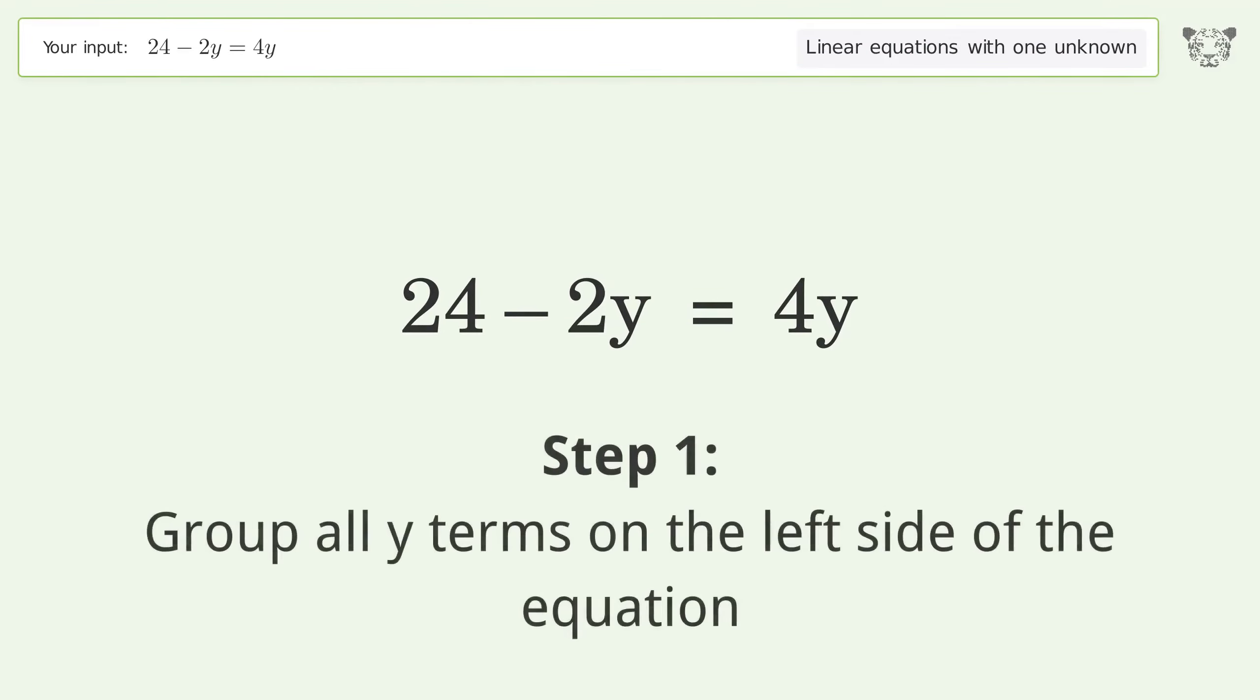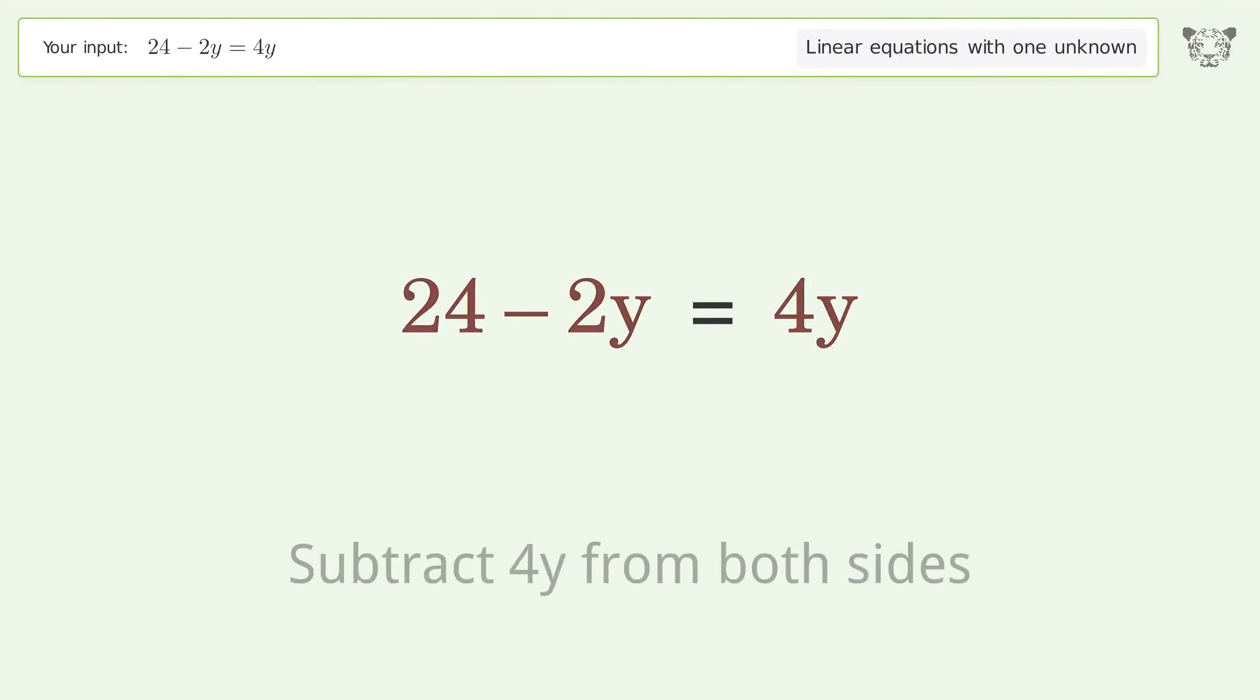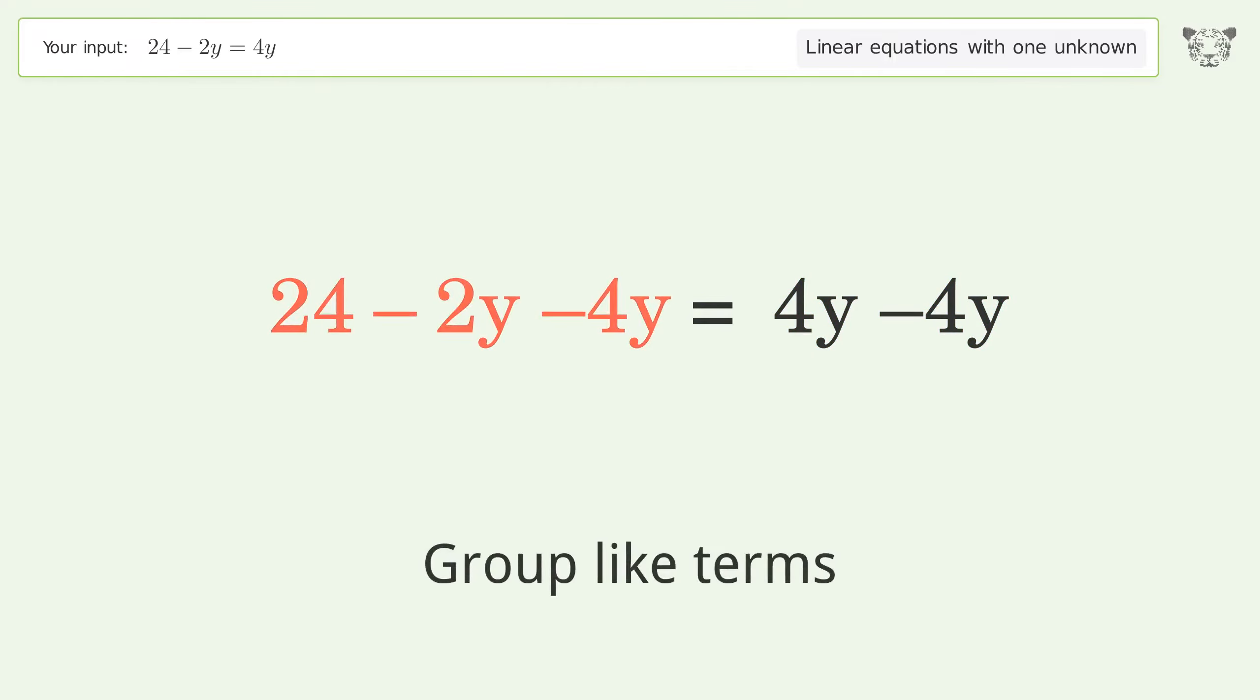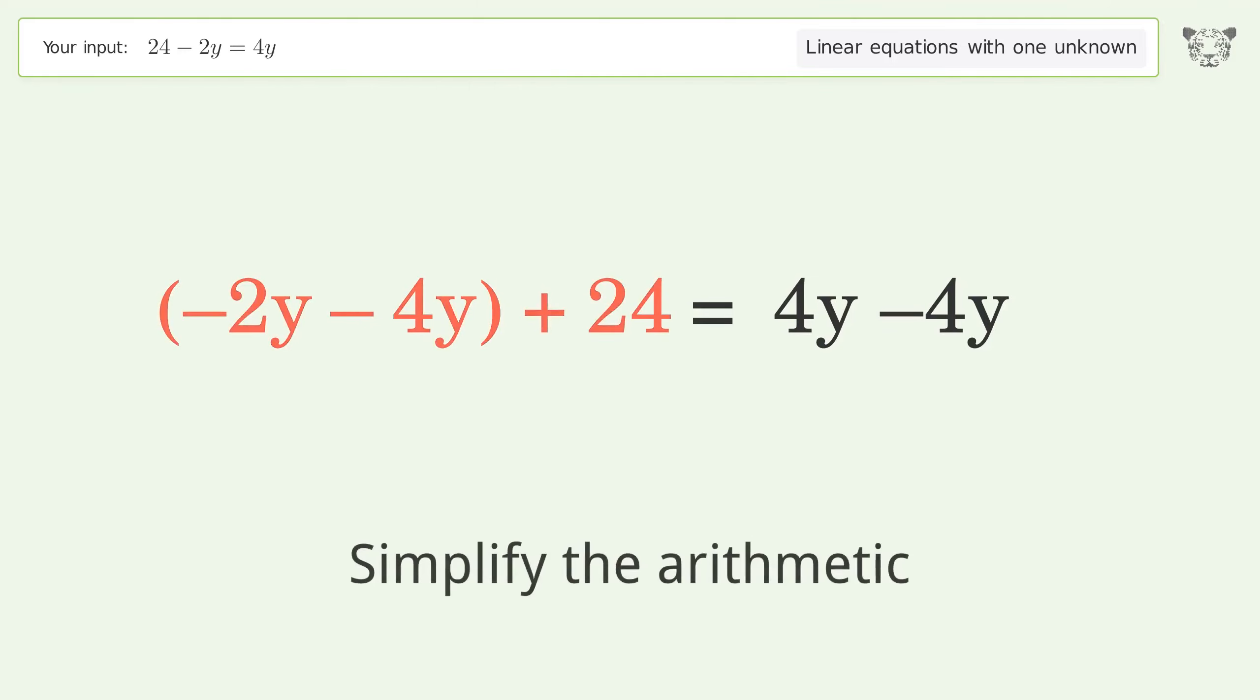Group all y terms on the left side of the equation. Subtract 4y from both sides. Group like terms. Simplify the arithmetic.